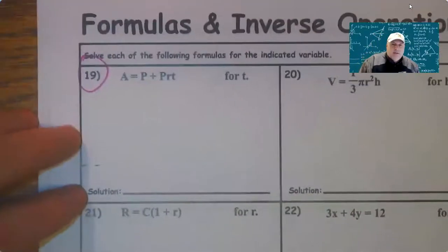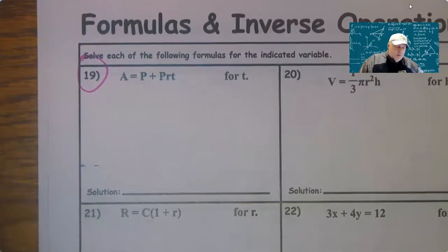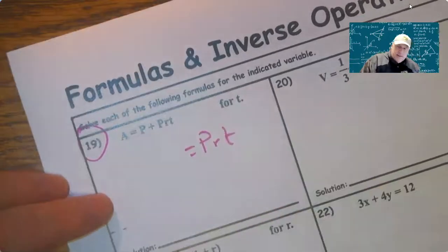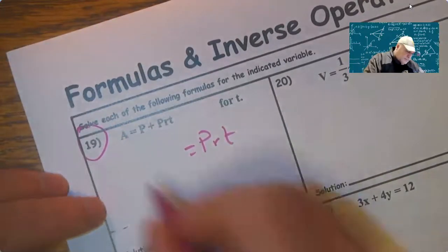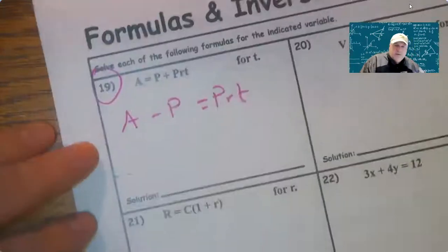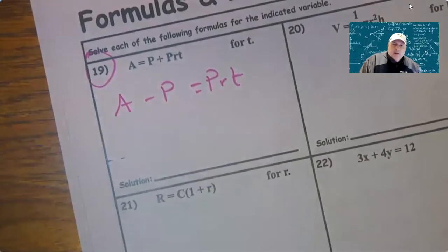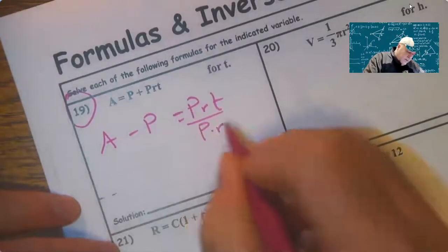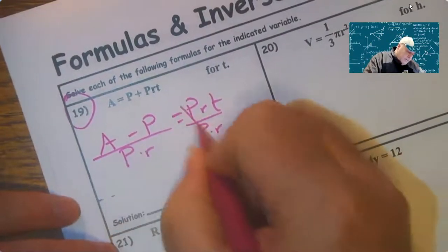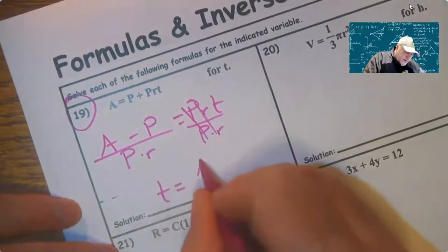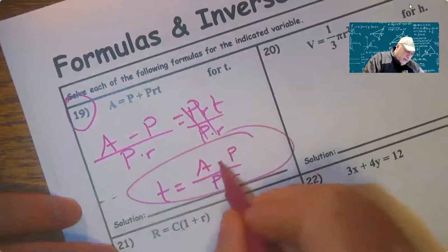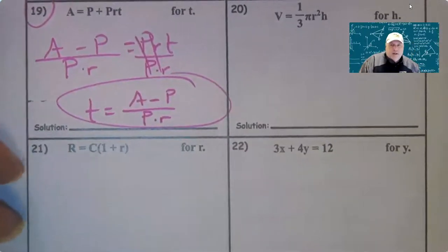Problem 19, solve for T. So we're at the step here where we want to isolate the term that contains it. There's the term that contains T. I want to get it alone on one side, so we subtract P. And now we're going to divide by P times R to get the T alone. You can do that. This is a problem on your quiz. This is where you got to solve and then you got to substitute in.